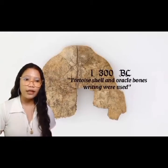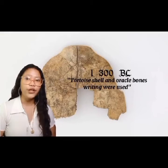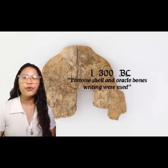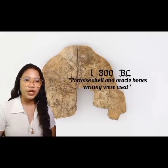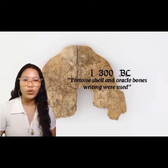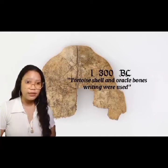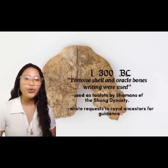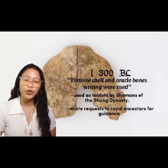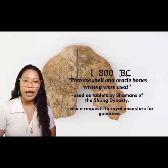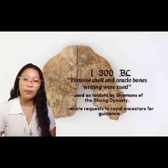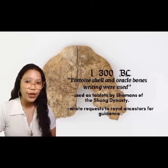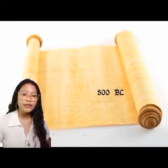Next would be 1300 BC, when tortoise shell and oracle bone writing were used. Through the rich information recorded on the oracle bones or tortoise shells used as tablets by shamans of the Shang dynasty, who wrote requests on them to royal ancestral spirits, asking for guidance on important events or information about the future.